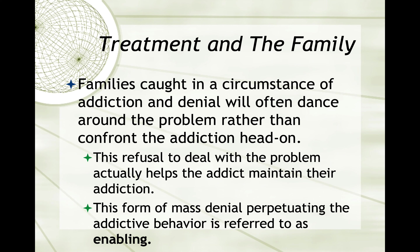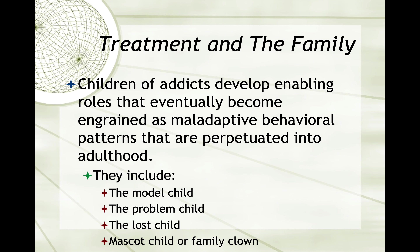In this family example, the father loved her very much and didn't want to antagonize her — he was afraid she would leave him — so he enabled her drinking, and eventually she committed suicide. He was an enabler, and the children were told not to bother mom, to keep her happy. They grew up as enablers, and one of the children became an alcoholic as a way to manipulate and control their lives. Children of addicts develop enabling roles that eventually become ingrained as maladaptive behavioral patterns perpetuated into adulthood. They include the model child, the problem child, the lost child, the mascot child, or the family clown.